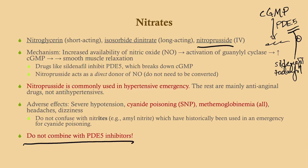Nitroprusside is a little different. Whereas nitroglycerin and isosorbide are organic nitrates, nitroprusside directly donates nitric oxide. It works very quickly and is very potent, so we use it in a hypertensive emergency — that's really the only reason we would give nitroprusside. The rest of the drugs — nitroglycerin, isosorbide dinitrate, and others — are mainly anti-anginal drugs, not antihypertensives. The adverse effects largely pertain to hypotension. One additional concern is cyanide poisoning — but only from nitroprusside (sodium nitroprusside, SNP).